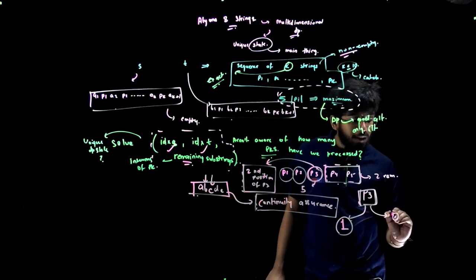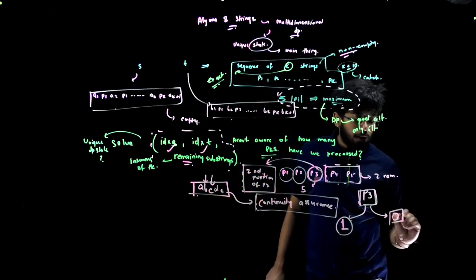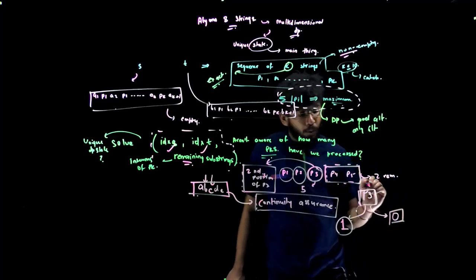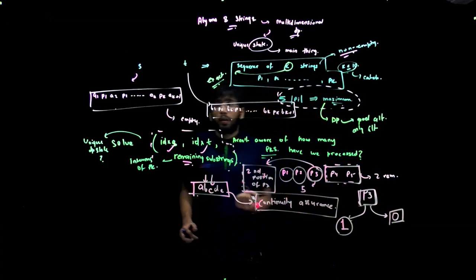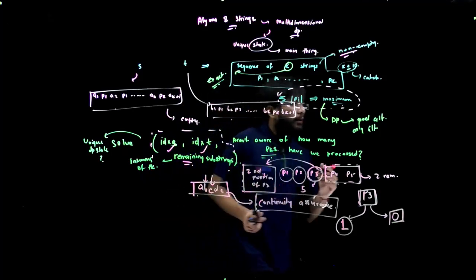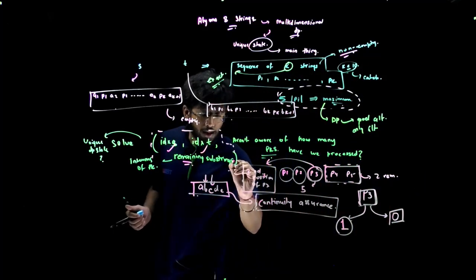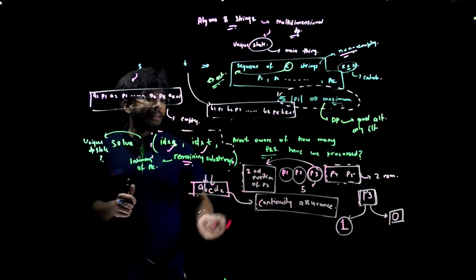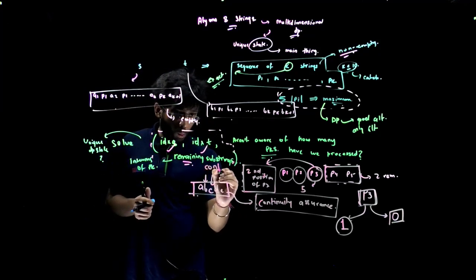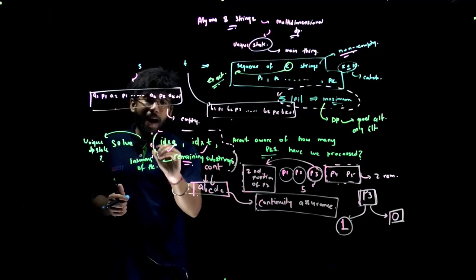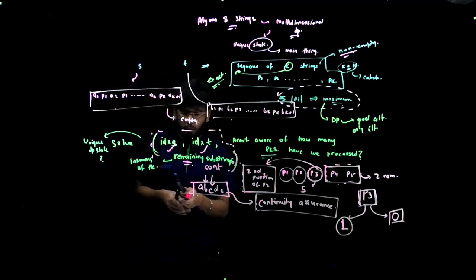And if I want to terminate the p3 string over here, I will take the help of 0. This is very simple to visualize that now we need to add something which stores the continuity as well as the fourth dimension.